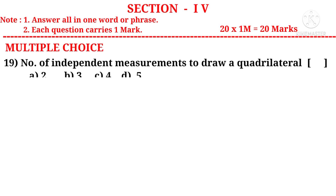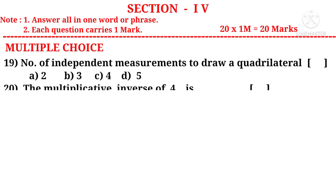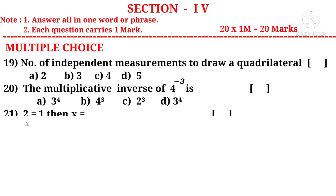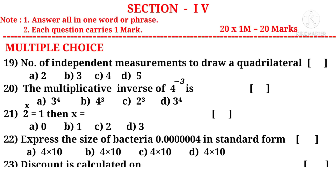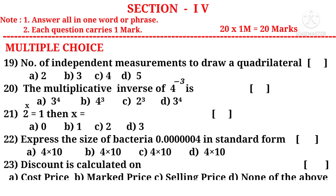Nineteenth question: number of independent measurements to draw a quadrilateral — options A, B, C, D — from Chapter 3, Construction of Quadrilaterals. Twentieth question: the multiplicative inverse of 4 power minus 3 is — options A, B, C, D — from Chapter 4, Exponents and Powers.